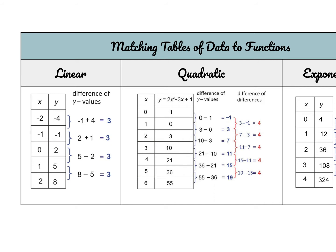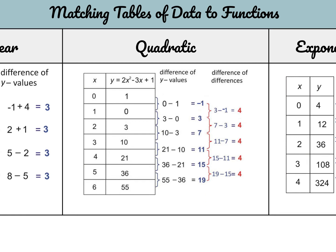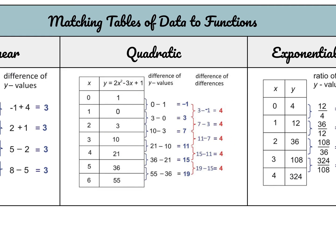For a quadratic function, the data has a common difference of differences. You still need a common interval for the X-values. If you look at the difference between Y-values, you get negative 1, then 3, then 7, then 11 — that's not consistent. But the difference between those differences is consistent: it's 4 each time. Since it's X-squared, you look at the second level of differences. That's how you identify a quadratic function from a table of data.